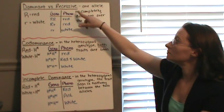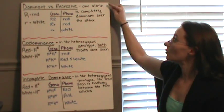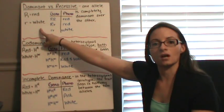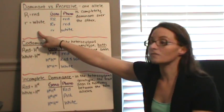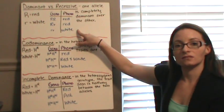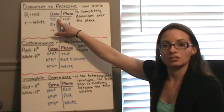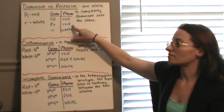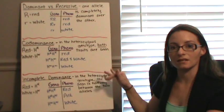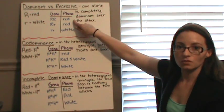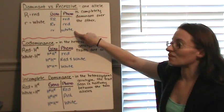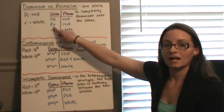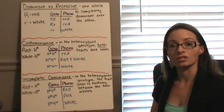Dominant versus recessive is what we've been talking about — we have one allele that is completely dominant over a second allele. So if we have red and white, red is completely dominant over white. We use the uppercase letter for red and lowercase for white. We can have a homozygous dominant, heterozygous, or homozygous recessive genotype. The heterozygous is the key one. With two red alleles you get a red phenotype, two white alleles gives a white phenotype, and heterozygous shows the dominant trait — red.